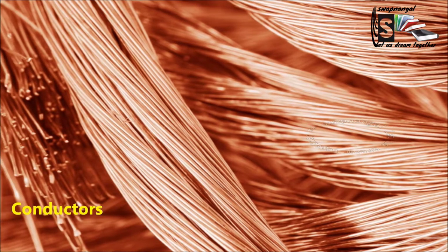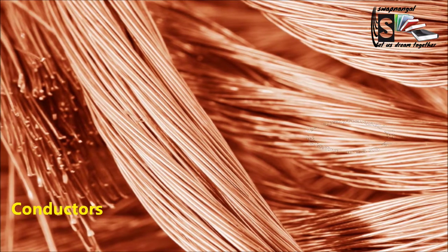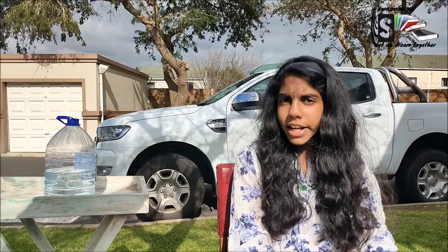Now we've got our energy source. Let's move on to the conductor. Conductors in an electric circuit are made of materials that carry or conduct electrons more easily than other materials. Materials that conduct electrons more easily are called conductors. Copper and aluminium are good conductors.